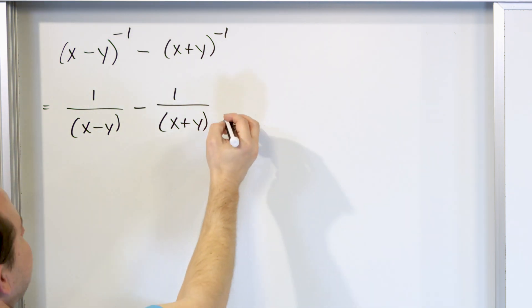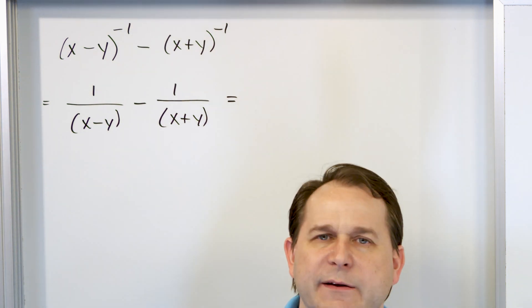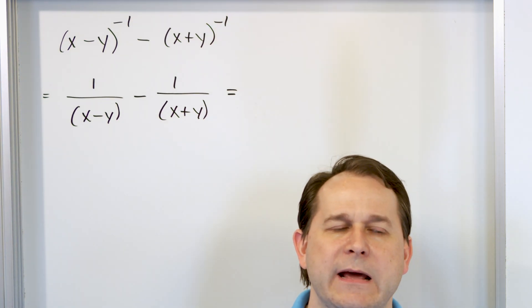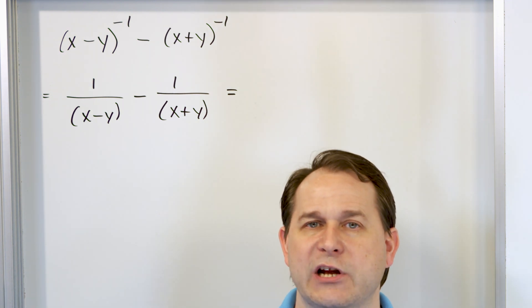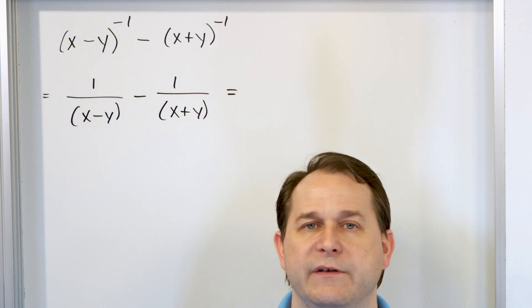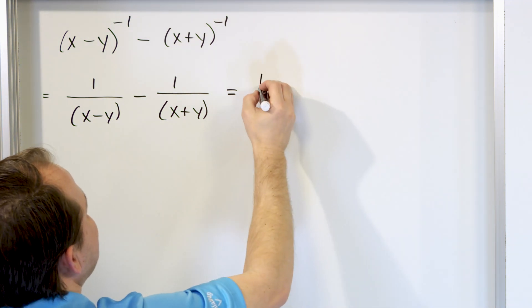And now I need to find a common denominator. So I have (x minus y) and (x plus y). There's nothing obvious I can multiply one or the other fraction by. So what you need to do if you don't have any other recourse is the common denominator to use is just the product of the two individual denominators. So to see that more clearly I'm going to write it like this.